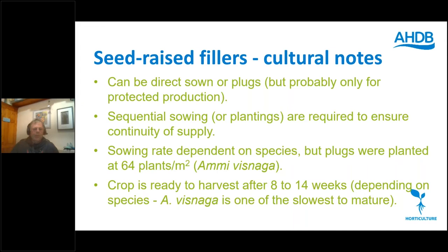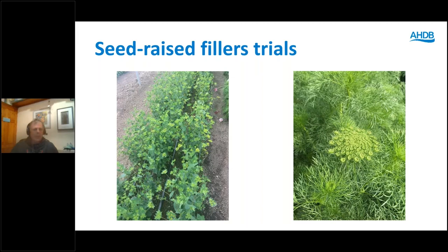The seeding rate is dependent on species and will be provided by your seed house. Plugs were planted at 64 per square metre, mainly for Ammi Visnaga, which needed closer spacing for the smaller heads. Crops are ready to harvest after 10 to 14 weeks depending on species and time of year. Ammi Visnaga was definitely the slowest to mature — always about two weeks behind everything else. Buplorum is now in commercial production; Ammi Visnaga is not, so there's some potential there.